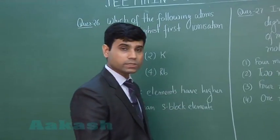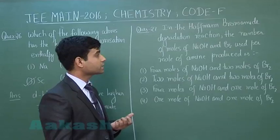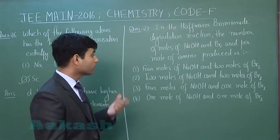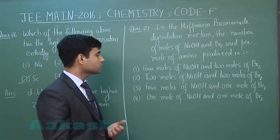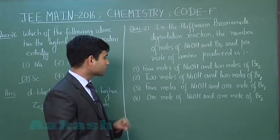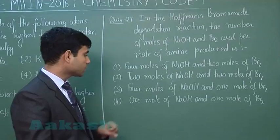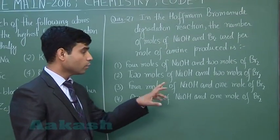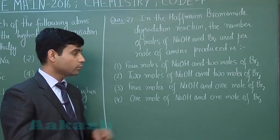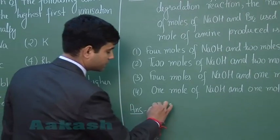The next question: in the Hofmann bromamide degradation reaction, the number of moles of sodium hydroxide and bromine used per mole of amine produced is — four moles NaOH and two moles Br₂; two moles NaOH and two moles Br₂; four moles NaOH and one mole Br₂; or one mole NaOH and one mole Br₂?